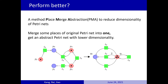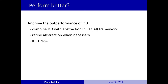For example, the figure on the left side shows a Petri net. Then, we merge red places into one, and blue places into one. Finally, we can get an abstract Petri net with only two places, shown on the right side. So, we try to improve the performance of IC3 by combining it with PlaceMerge Abstraction in a CEGAR framework.